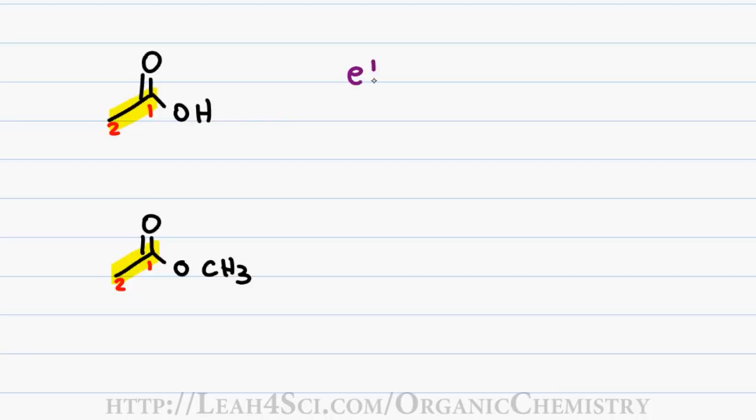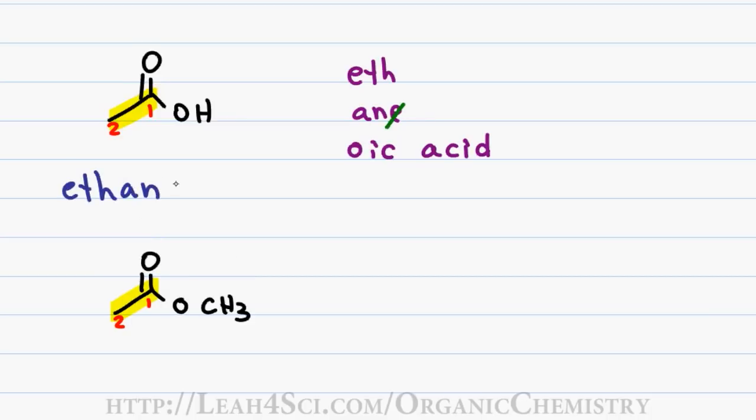For the first group, we have a first name of ETH and a last name of ANE for only single bonds. Since it's a carboxylic acid, we get the ending OIC acid. Since OIC acid begins in a vowel, I drop the E in ANE for a final name of ethanoic acid.